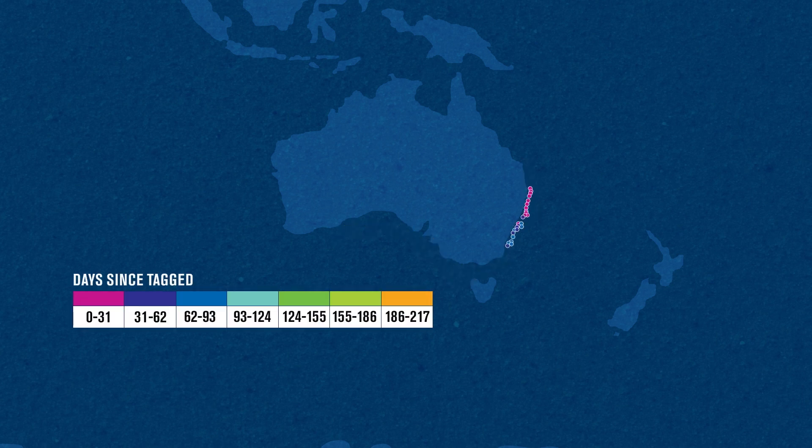Other sharks have travelled to South Australia, while several others have crossed the Tasman Sea to New Zealand and back.